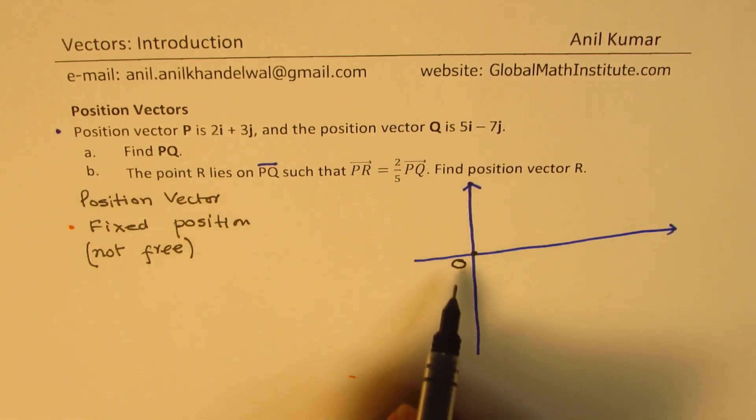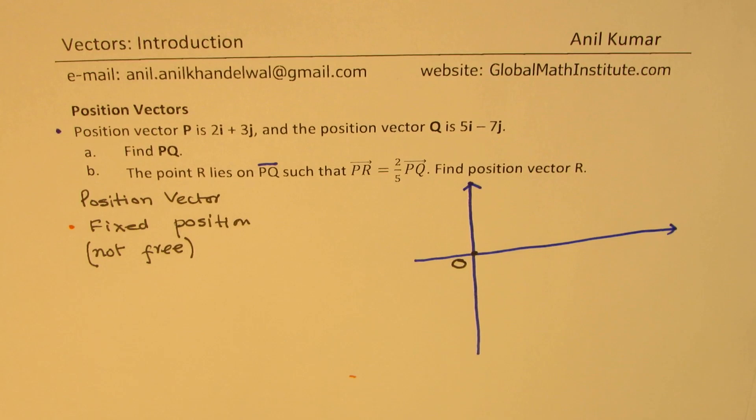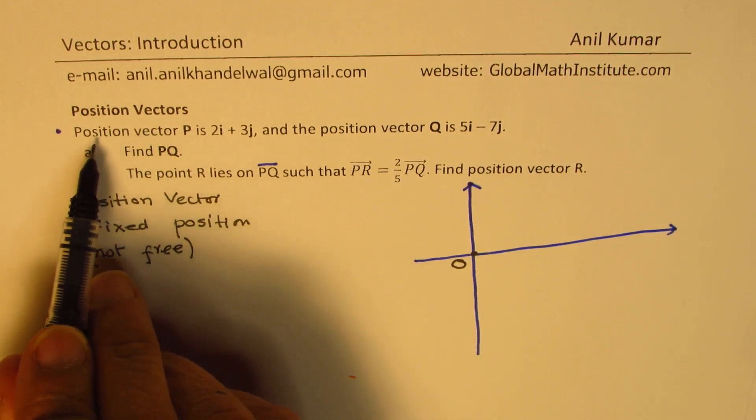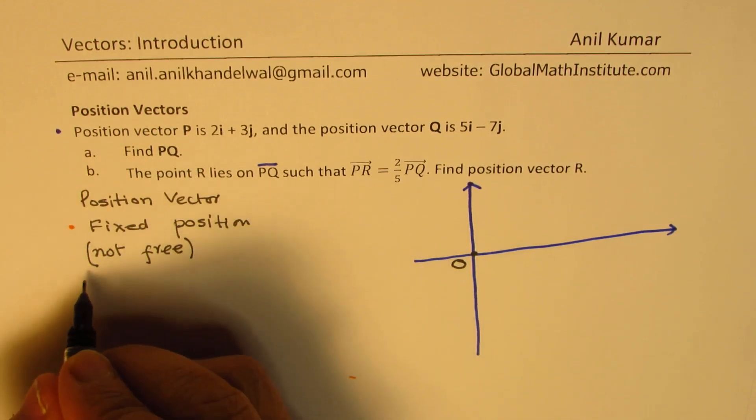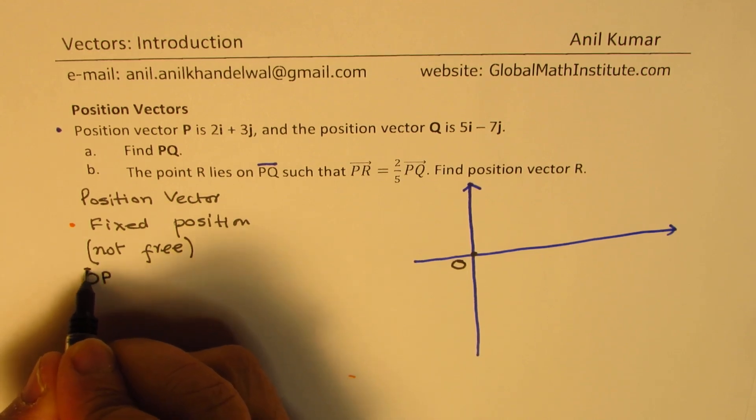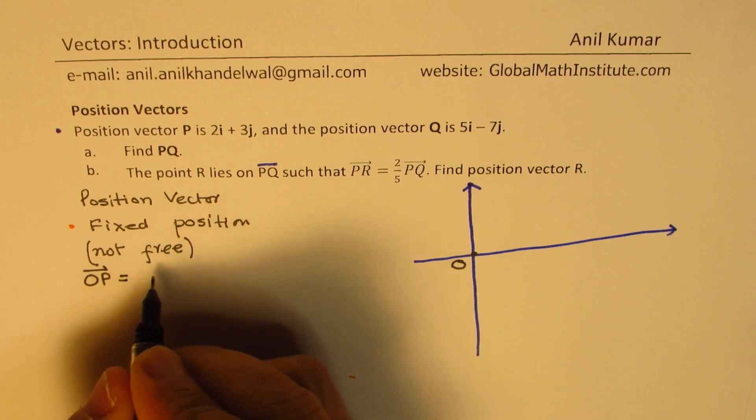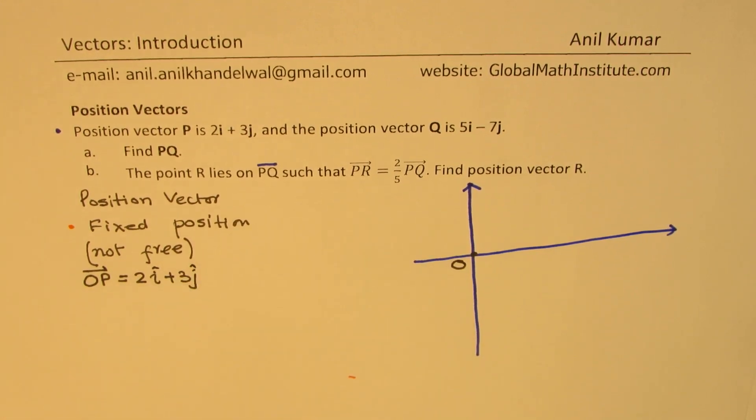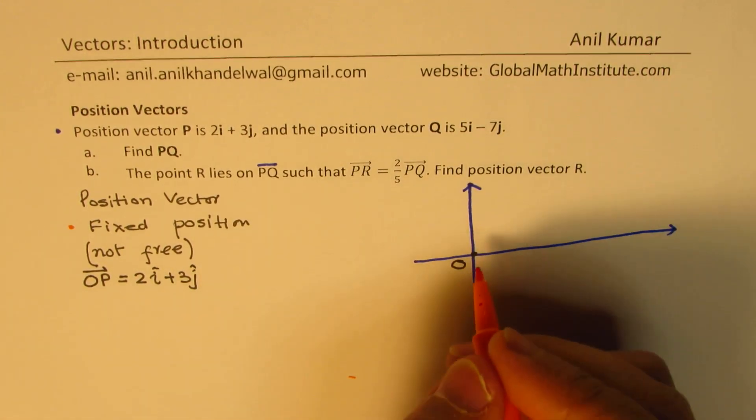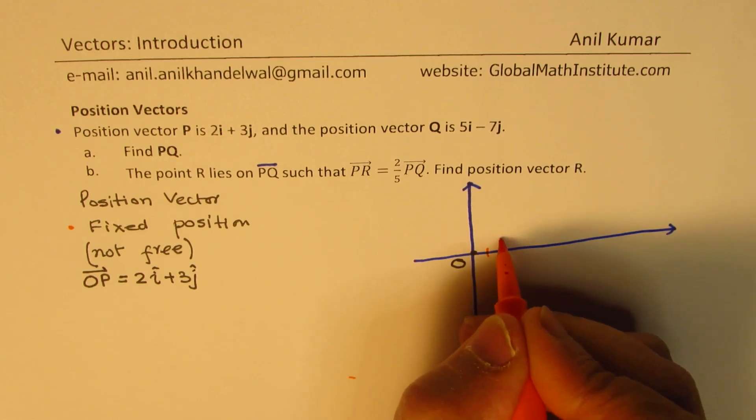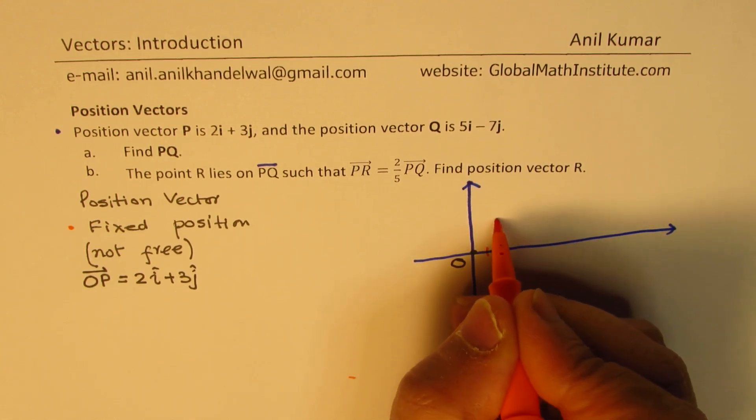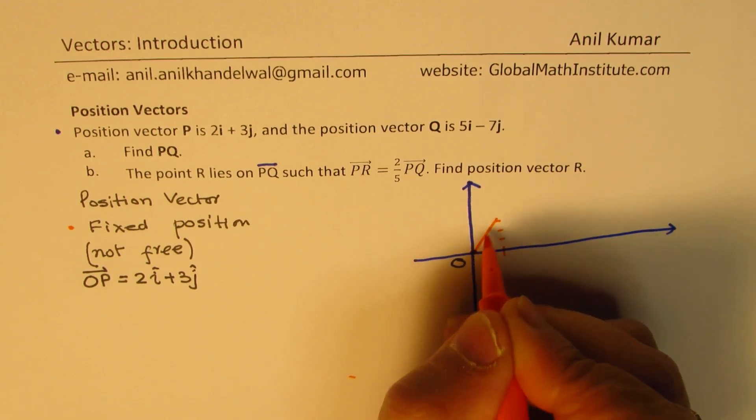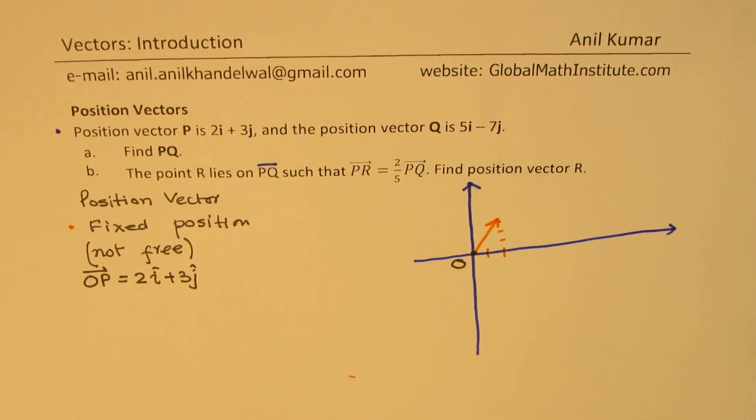Now, since origin is represented by letter O, we could also write the position vector P as OP. So OP is the vector which is equal to 2i plus 3j. So that means we could represent it like this: 2 along this direction and 3, one, two, three. There you go. So that becomes the vector P or OP. Does it make sense to you?